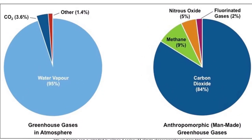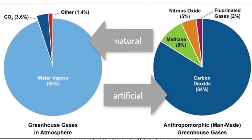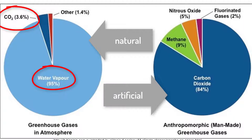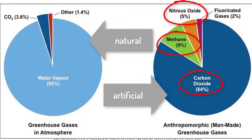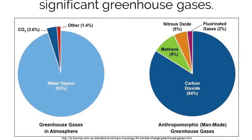Greenhouse gases occur in ecosystems in both natural and artificially placed molecules. Carbon dioxide and water vapor are both naturally occurring molecules that cycle within ecosystems, so of course we should find them in the atmosphere and they contribute to global warming. Aside from natural processes, humans have created an unnatural environment that releases increased amounts of carbon dioxide, nitrous oxides, and methane into the atmosphere.